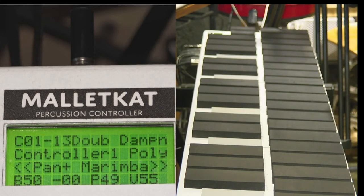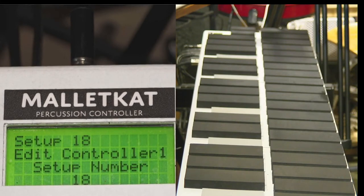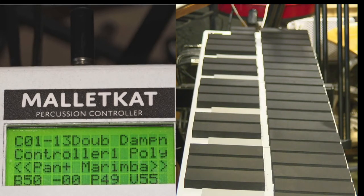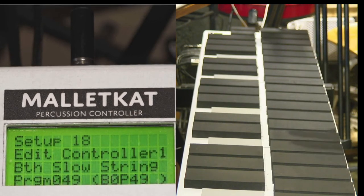You'll notice, if I go to chain 1, step 13, the Malletkat sent out setup 18. 18 was the first step, and it sent out a program change of 49.